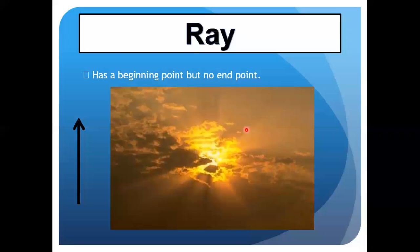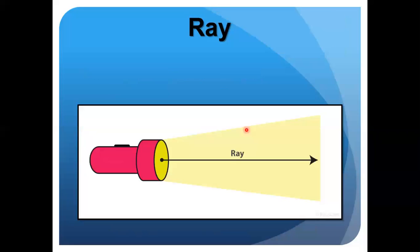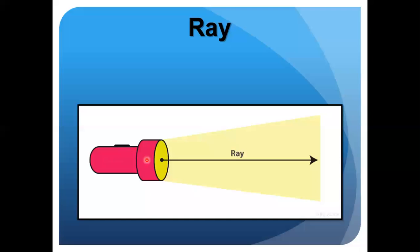As I mentioned, a ray has a starting point but no end point. You can see the light ray on this picture — this is the starting point, but there is no end point.